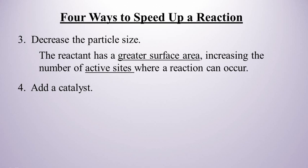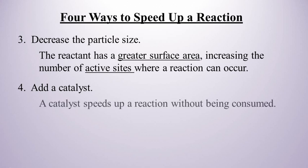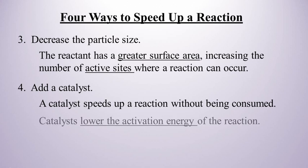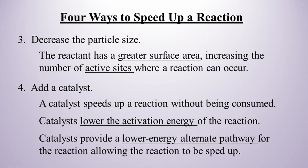Now, the fourth way to speed up a reaction is to add a catalyst. And a catalyst is a molecule or some substance that speeds up a reaction without being consumed. We'll talk more about that in the next video. Now, catalysts do this by lowering the activation energy of the reaction. Now, how do they do that? Well, they provide what we would call a lower energy alternate pathway for the reaction.